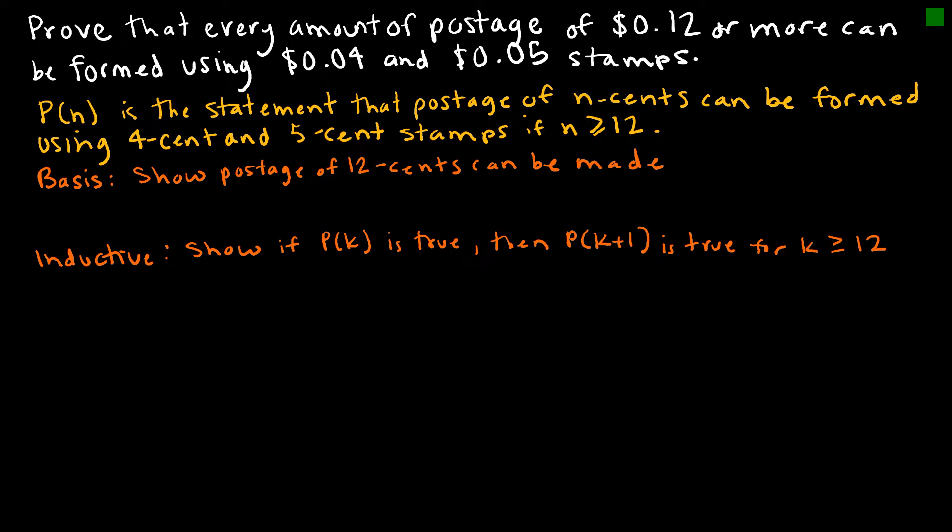What I want to do is look at a proof by induction, and then we'll look at it again using strong induction so that we can see the difference between the two. In this question we're asked to prove that every amount of postage of 12 cents or more can be formed using four-cent and five-cent stamps. So p(n) is the statement that postage of n cents can be formed using four and five-cent stamps, assuming n is greater than or equal to 12.